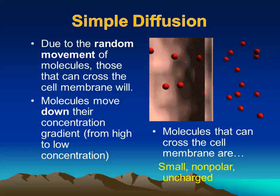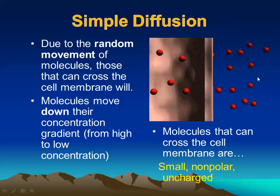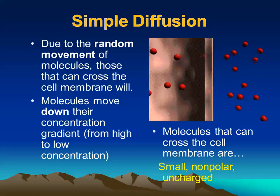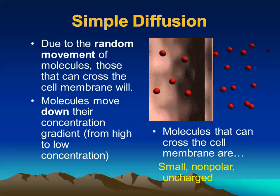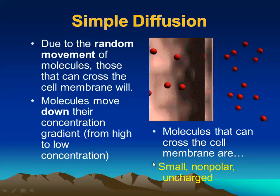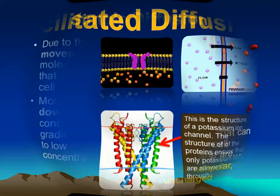Molecules that can cross directly through simple diffusion are small, non-polar, and uncharged, because the phospholipid tails that make up most of the cell membrane are hydrophobic — they don't like polar substances. Water itself, however, can actually diffuse in and out of a cell membrane quite easily. In general, the rule is small, non-polar, and uncharged, with some exceptions.